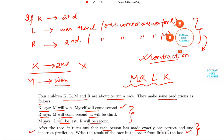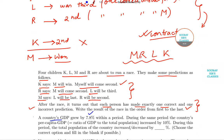Now the next question is that a country's GDP grew by 7.8 percent within a period. During the same period, the country's per capita GDP, which is equal to the ratio of GDP to total population, so the formula is provided to you, increased by 10 percent. During this period, the total population of the country increased or decreased by what percentage? We have to fill the blank with a correct answer.